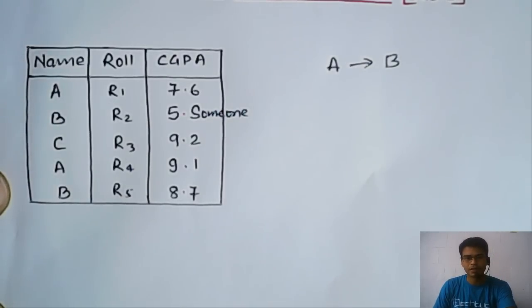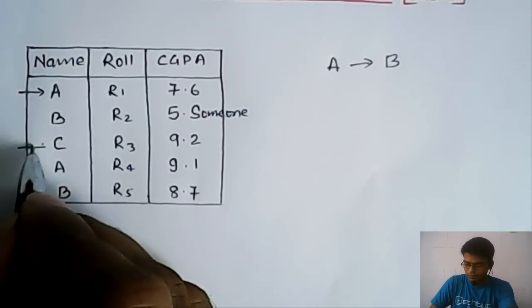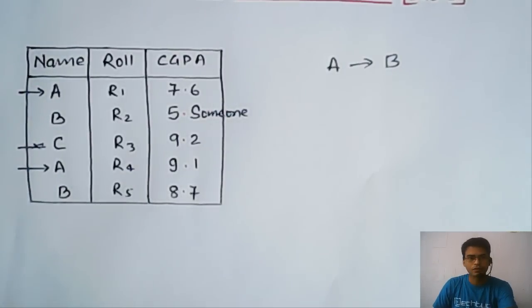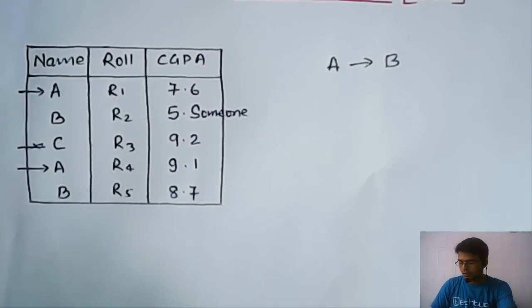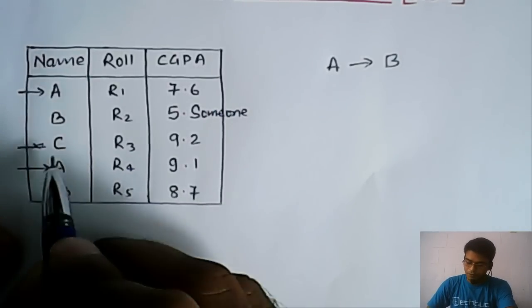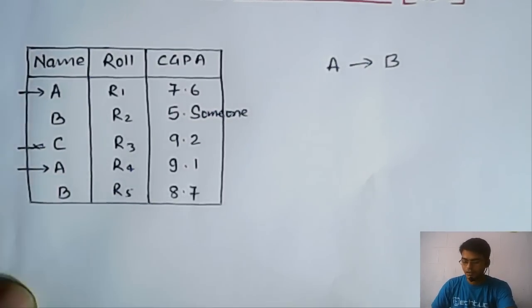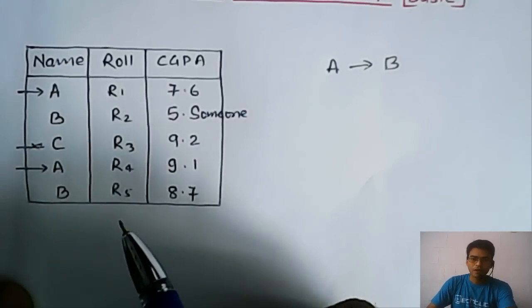can you answer? No, because we have two A's here. The person doesn't know which A's CGPA has been asked, so you have to find another way. You will ask, which A? We have two A's, give me the roll number or something like that. So we have to have